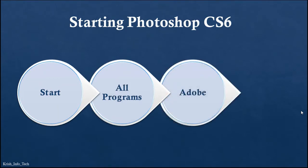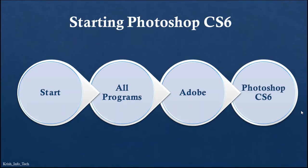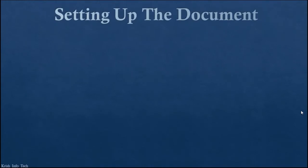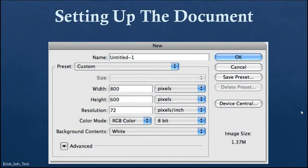To start Photoshop CS6, click on the Start button, then All Programs, then Adobe, then select Adobe Photoshop CS6. Once you start Photoshop, you need to set up the document - setting up the document means setting up the background page where you are going to work. The settings page has a New dialog box where you type the name of the photo.